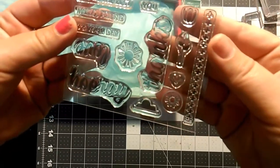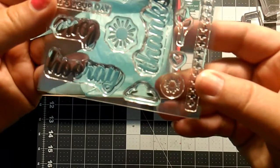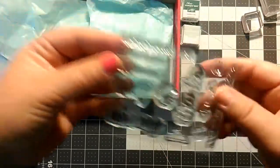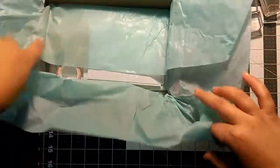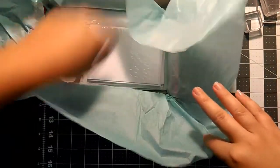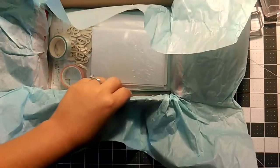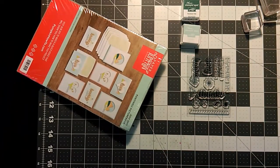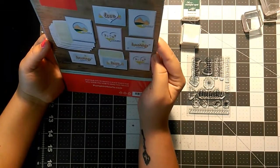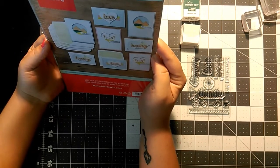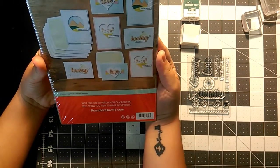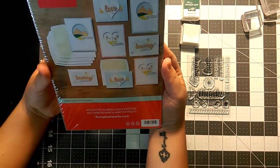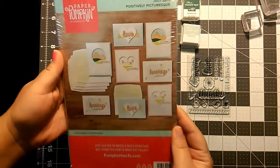It says July Positively Picturesque contains supplies to make eight cards and envelopes.